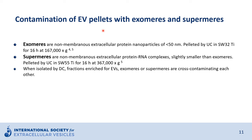One should also realize that EV pellets are contaminated with exomeres and supermeres, which have been more recently reported. Exomeres are non-membranous extracellular protein nanoparticles that pellet usually at very high G-force and only after very long centrifugation times. Supermeres are non-membranous extracellular protein-RNA complexes, even smaller than exomeres, and pellet at even higher G-forces. However, some exomeres and supermeres will already pellet at 100,000 G and will always contaminate the isolated extracellular vesicles to some extent.